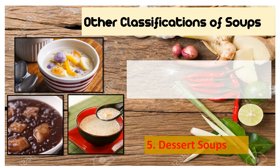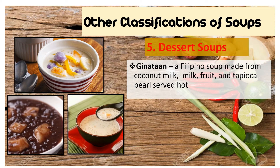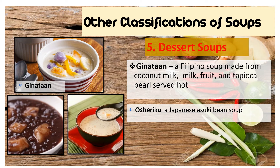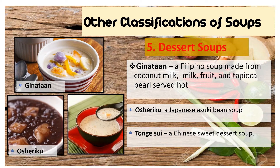Another classification of soup is the dessert soup. The best examples here in the Philippines of the dessert soup is the ginataan. Ginataan is a Filipino soup made from coconut milk, fruit, and tapioca pearl, and served hot. Another one is the oshiruko, a Japanese azuki bean soup. And we also have the tongsui, which is a Chinese sweet dessert soup.